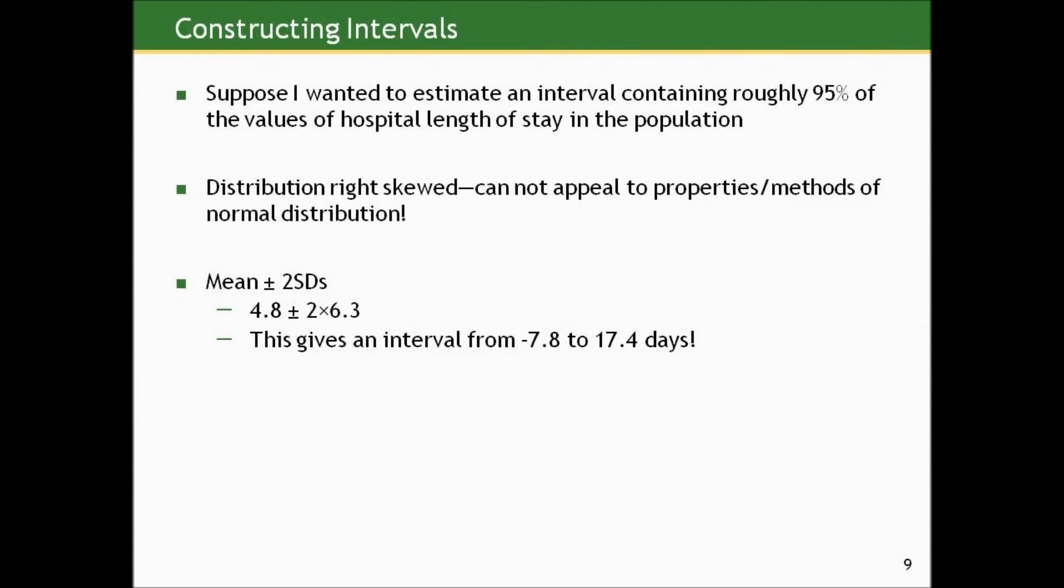So suppose I want to use this sample data to estimate an interval containing roughly 95 percent of the length of stay values for all patients discharged in that same year from that teaching hospital. Well, this is clearly data not from a normal distribution. The random representative sample shows strong evidence of a right skewed distribution. So I cannot necessarily appeal to the properties or methods of a normal distribution.